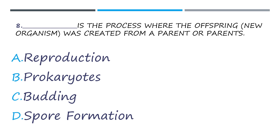Number 8. Blank is the process where the offspring or a new organism was created from a parent or parents. A. Reproduction. B. Prokaryotes. C. Budding. And letter D. Spore formation.